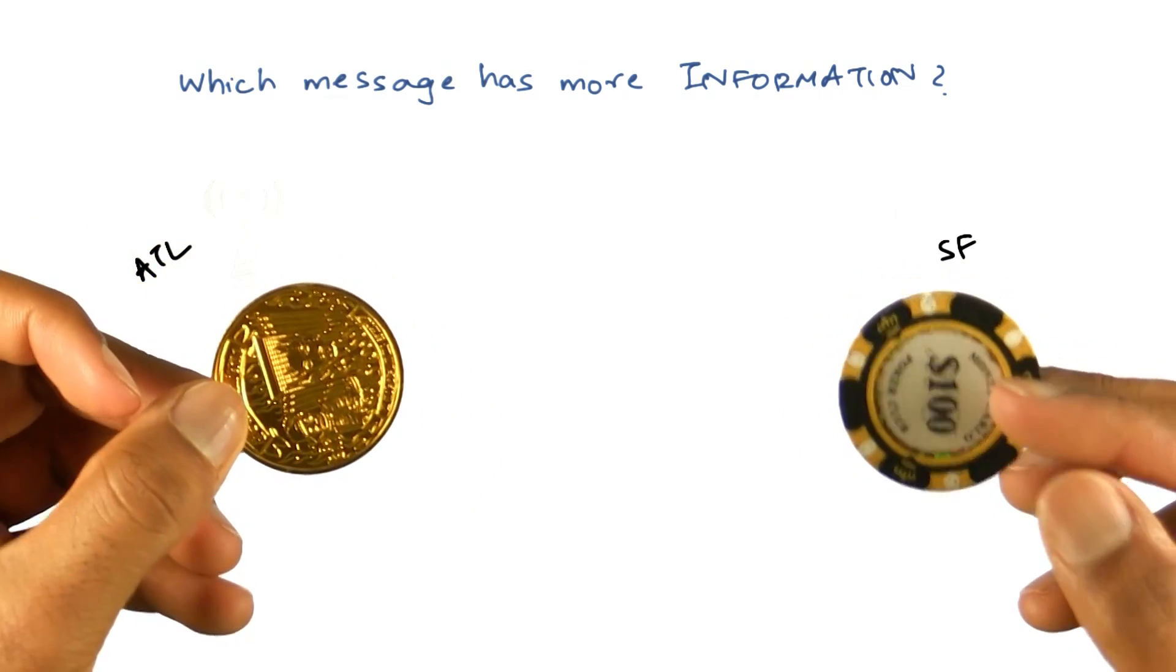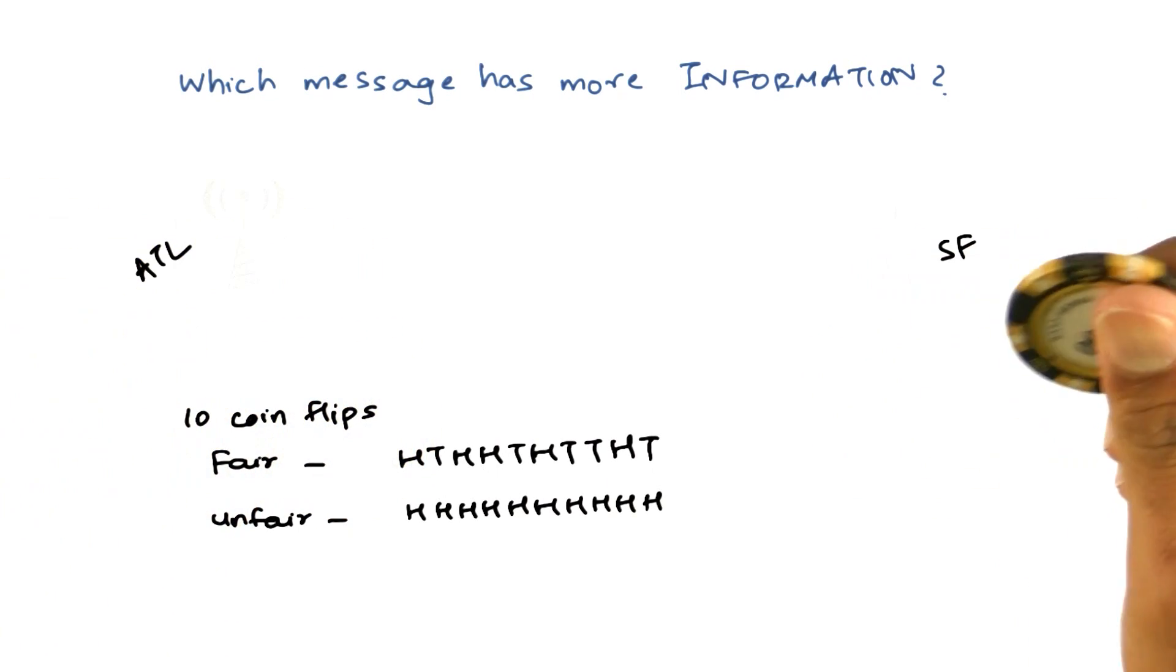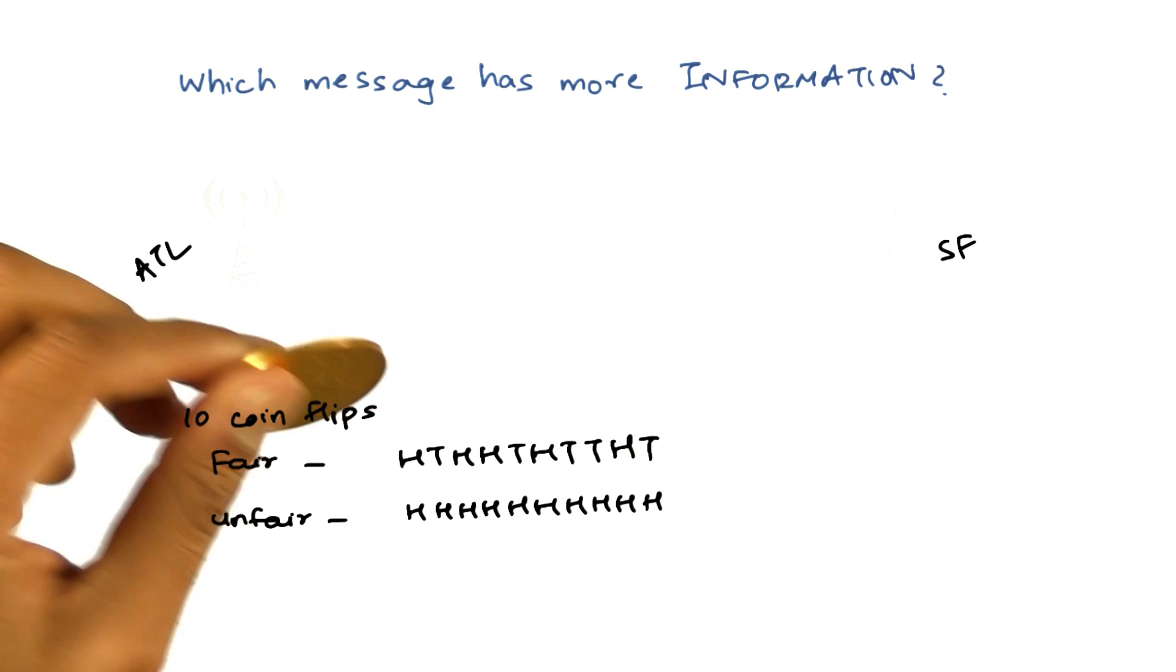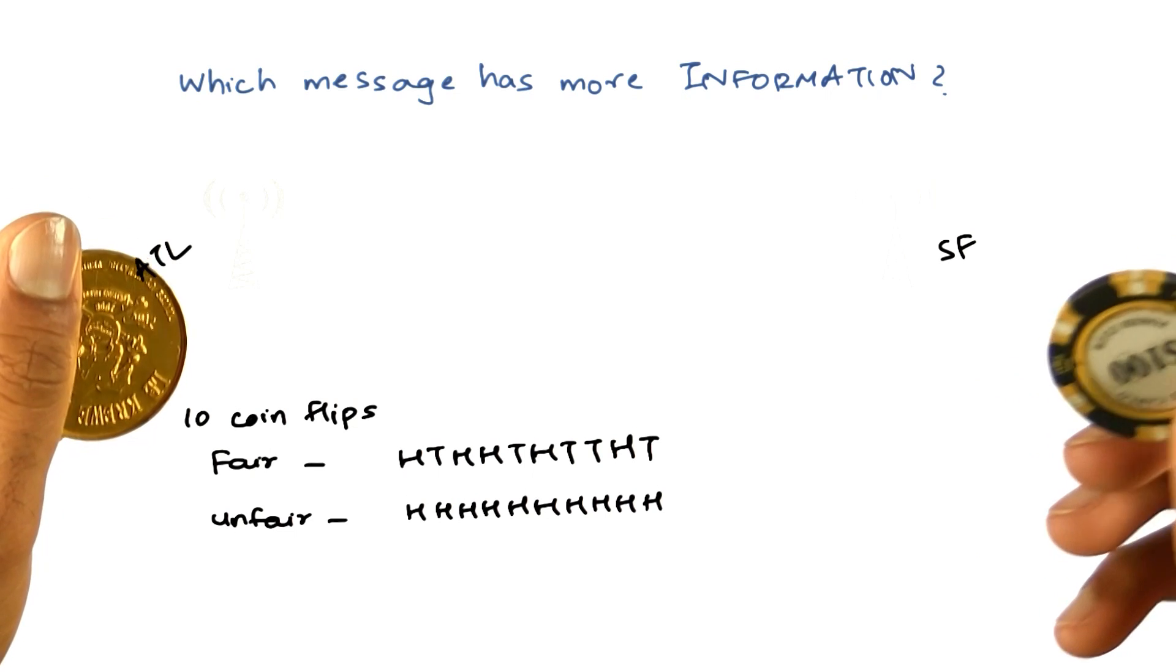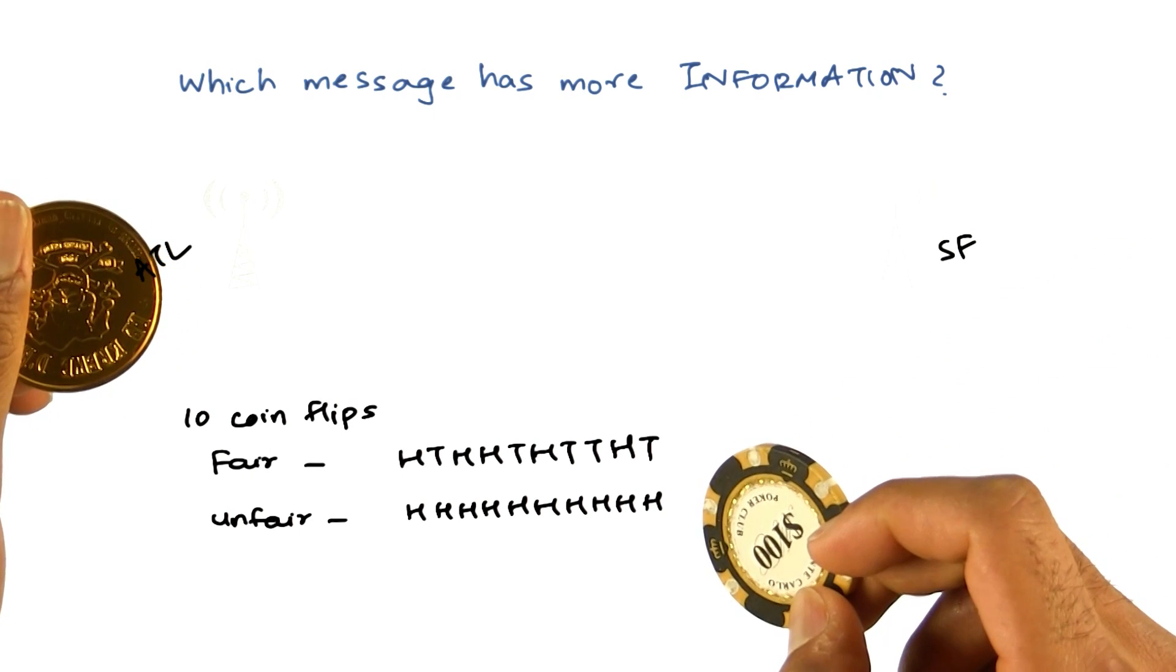So we'll construct two messages after flipping both of them and recording what their state is. So here it is. I did 10 coin flips. With the fair coin, I got a few heads, a few tails in this particular sequence. The unfair coin, I'm calling every state as a head state, and I basically saw 10 heads.